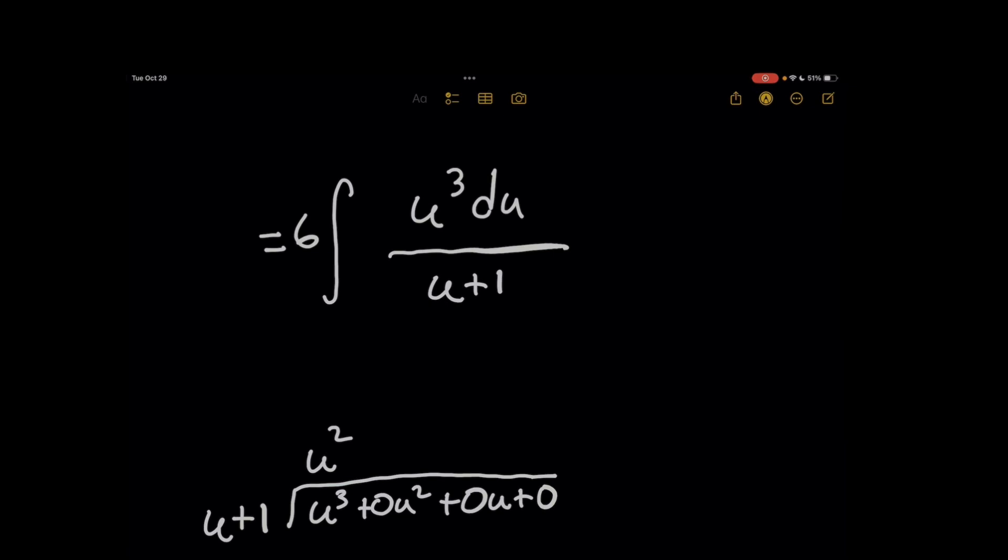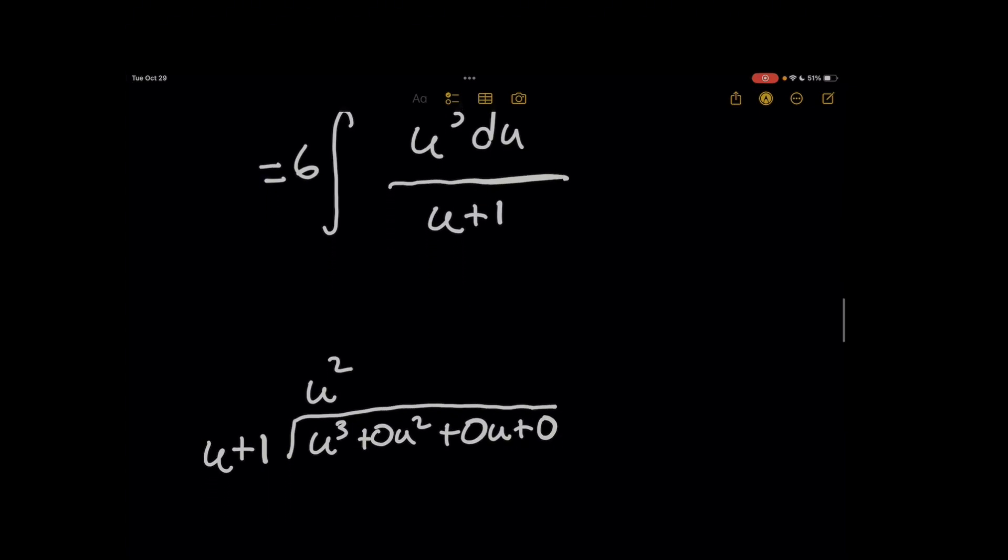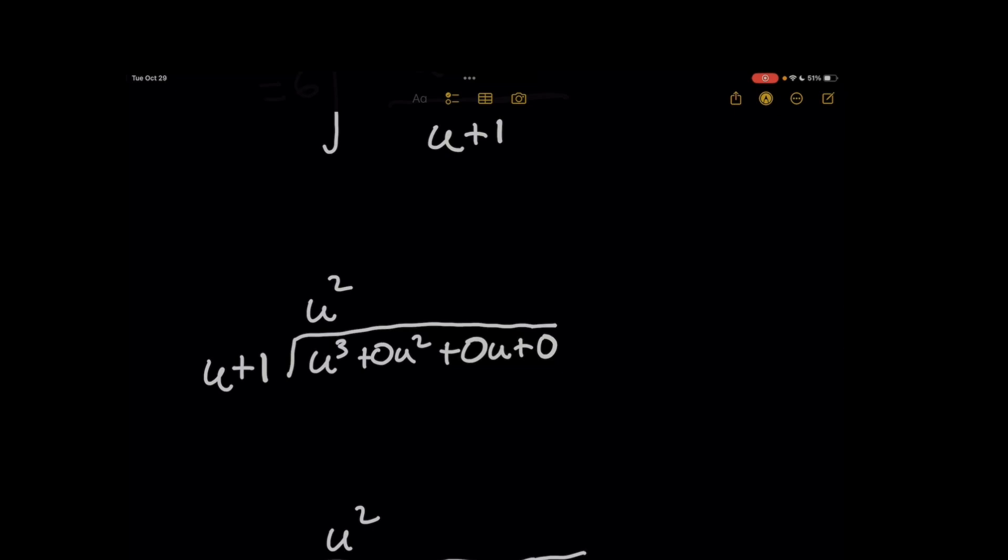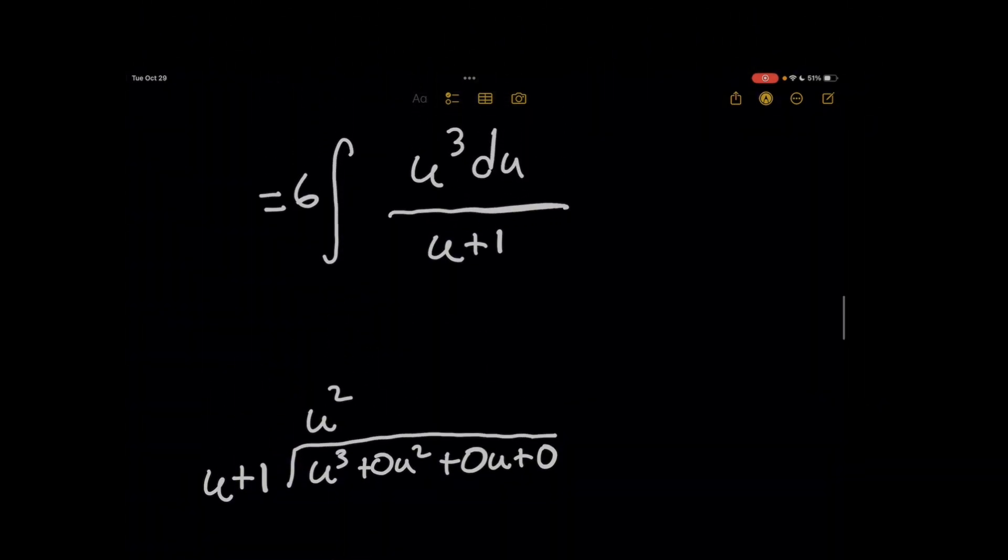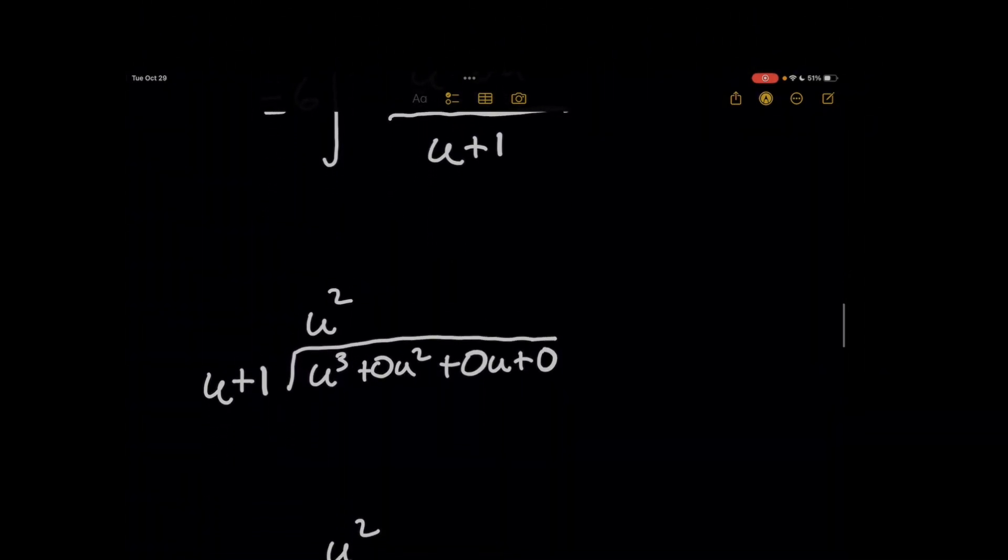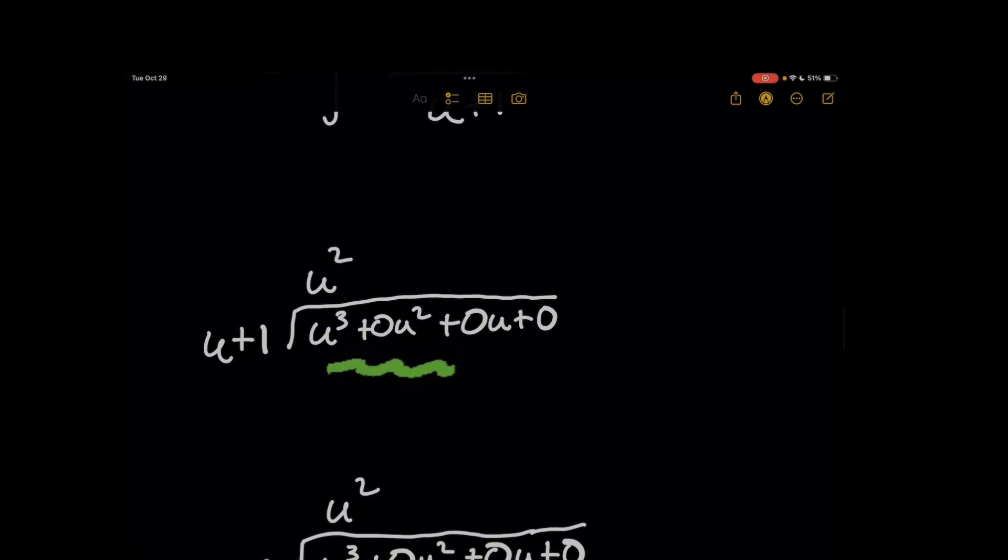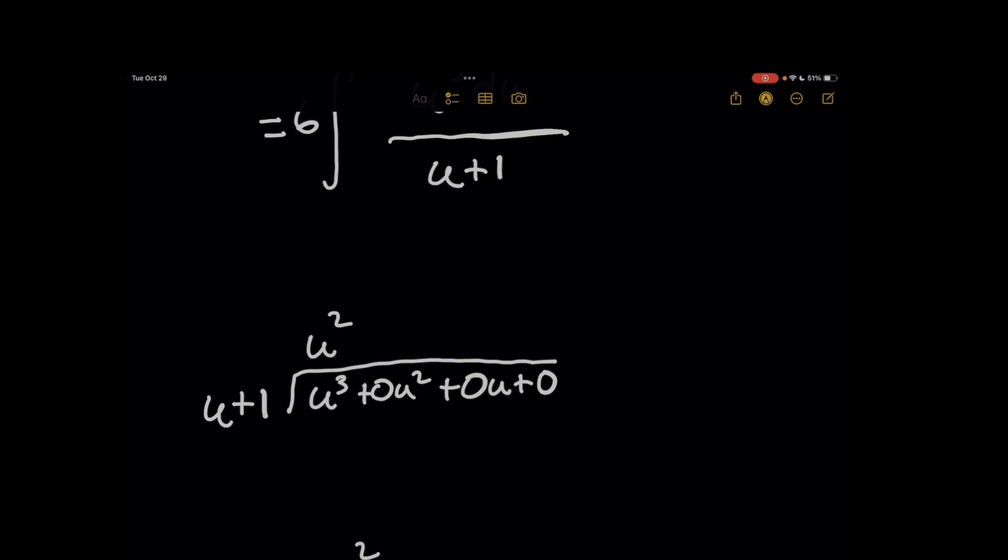So what I want to do now with long division is I take the denominator known as the divisor. I put it here on the left. The numerator, this u cubed, is going to go underneath the bracket here known as the dividend. And for every missing term in the polynomial expression, I'm going to use these zero coefficients. It just helps write every term out.